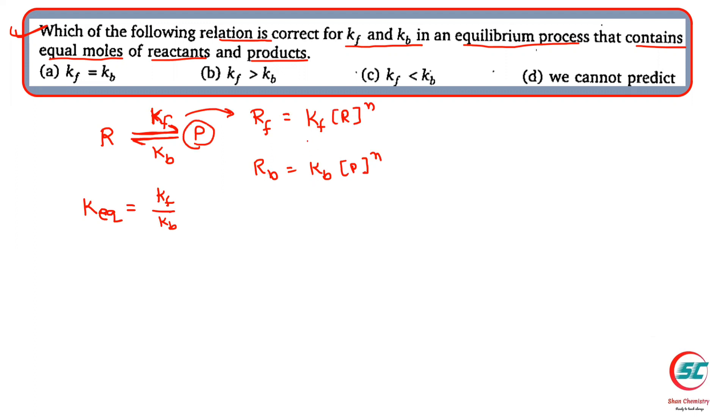Now, if you take a relation here, k forward and k backward, then it will be k forward upon k backward into concentration of reactant raised to the power n. What is the concentration of product raised to the power n? So k forward upon k backward is equal to concentration of product raised to the power n and concentration of reactant raised to the power n. They have been cross-multiplied.